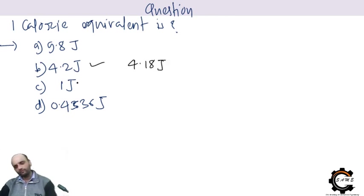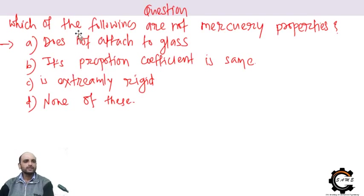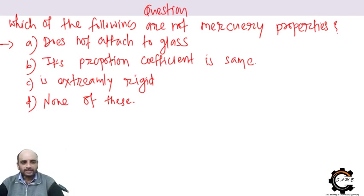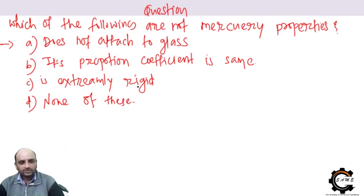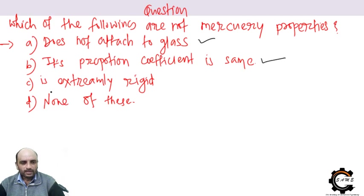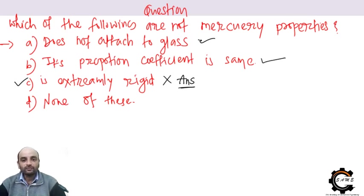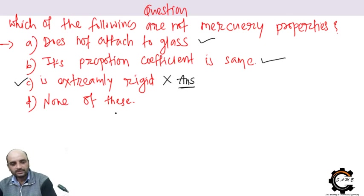One calorie is equivalent to 4.18 Joules; rounding off gives 4.2 Joules — keep this in mind. For the question on mercury properties: mercury does not attach to glass, it has a uniform coefficient of expansion, but it is not extremely rigid — so 'extremely rigid' is not a property of mercury. That is the answer.